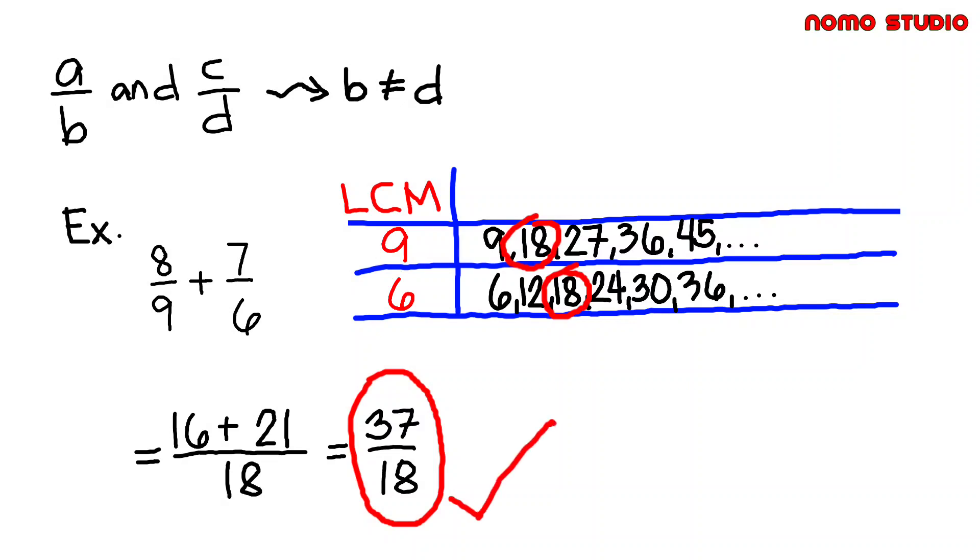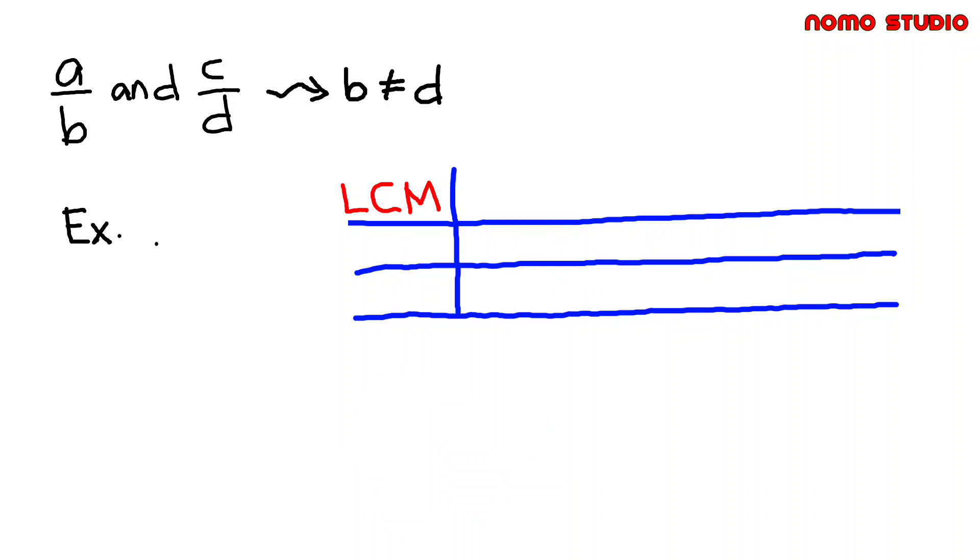Same method when subtracting fractions having different denominators. Example: 11 over 5 minus 9 over 7. Here we have 5 and 7.